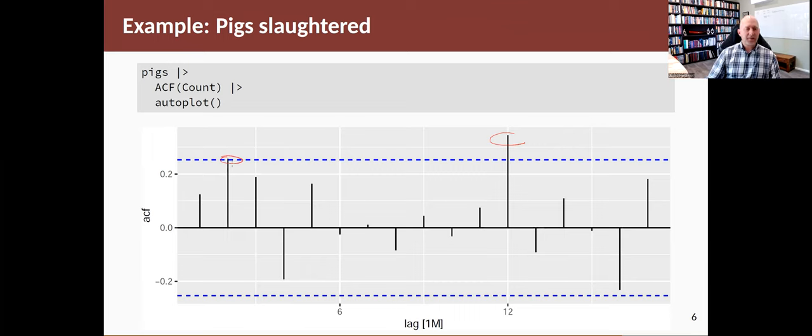We've got 16 spikes here, and there's a 5% chance for each one of them that it could be outside the range. Getting one out of 16 is not very surprising, so I'd probably ignore the second one at lag two. But to get two is getting a little less likely to occur, and this one's a fair way outside the range.